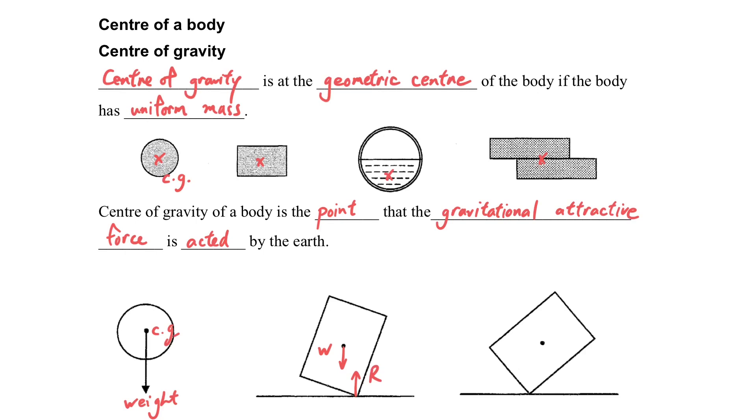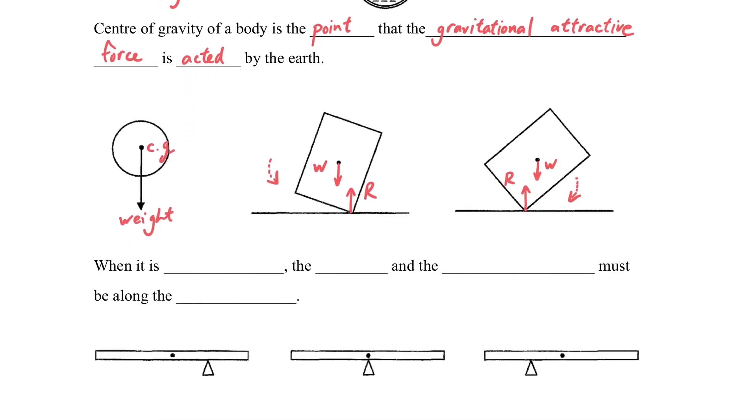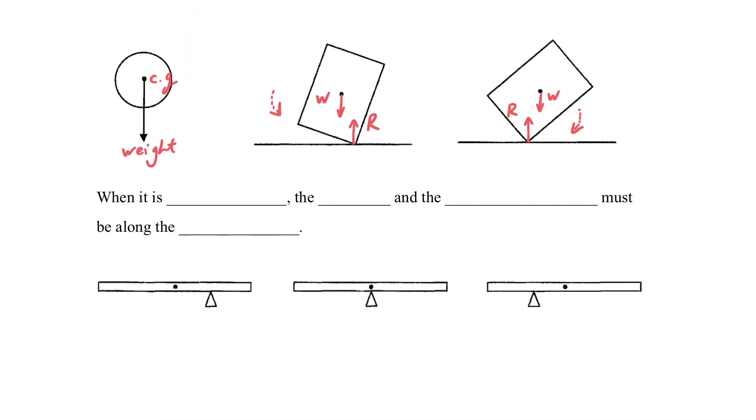Now what is the use of it? For example, you can see that there's a weight and a normal reaction. When the weight is not pointing at the normal reaction, it will form a net moment, so the object will turn.